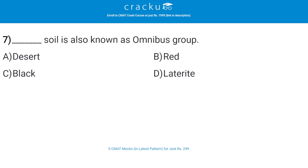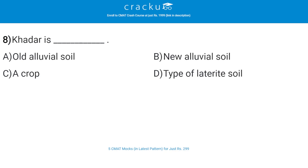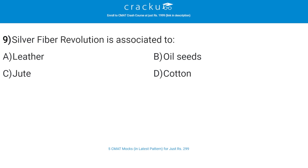Dash soil is also known as the omnibus group — the correct answer is B — red soil. Khadar is dash — the correct answer is B — new alluvial soil.